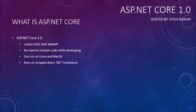ASP.NET Core 1.0 runs on a very stripped-down version of the .NET framework. They essentially removed all the unnecessary parts still found in .NET 4.6 and limited Core 1.0 to just the parts necessary to run this new version of MVC and Web API. It really is a brand new version of the .NET framework specifically oriented towards web development.